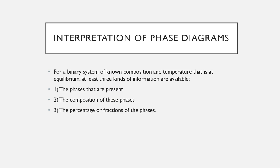Interpretation of phase diagrams: for a binary system of known composition and temperature at equilibrium, at least three kinds of information are available — first, the phases that are present; second, the compositions of these phases; and third, the percentages or fractions of the phases.